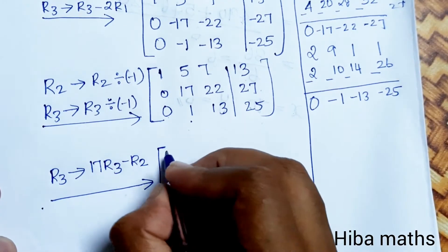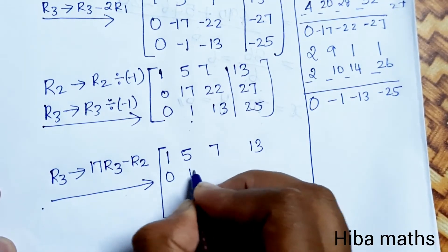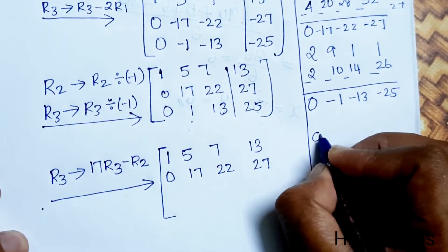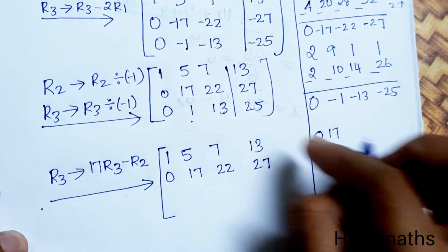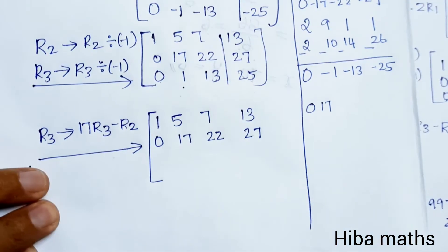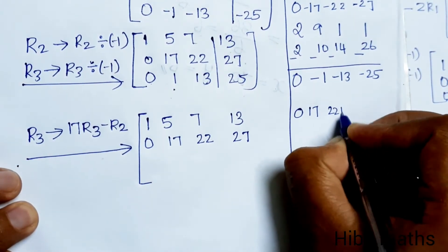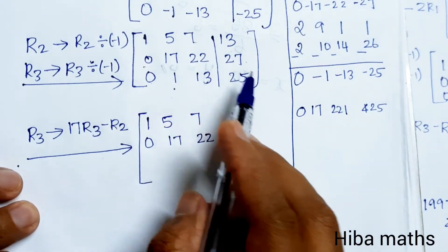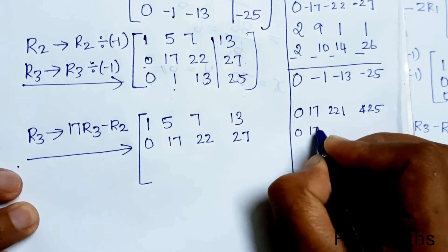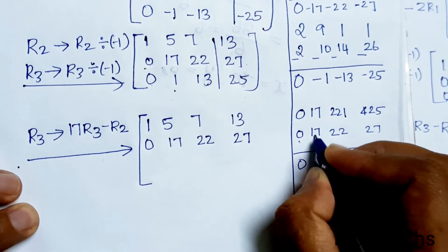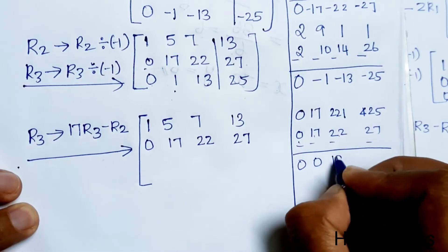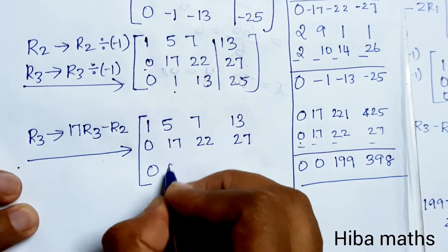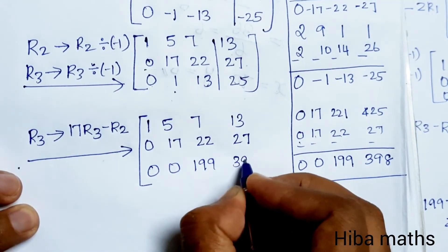First row and second row stay: 1, 5, 7, 13 and 0, 17, 22, 27. Now R3 changes to 17 times R3 minus R2. Computing: 17 into R3 gives 0, 17, 17×13=221, 17×25=425. Minus R2 which is 0, 17, 22, 27. So new R3: 0-0=0, 17-17=0, 221-22=199, 425-27=398. The matrix is now upper triangular with last row: 0, 0, 199, 398.